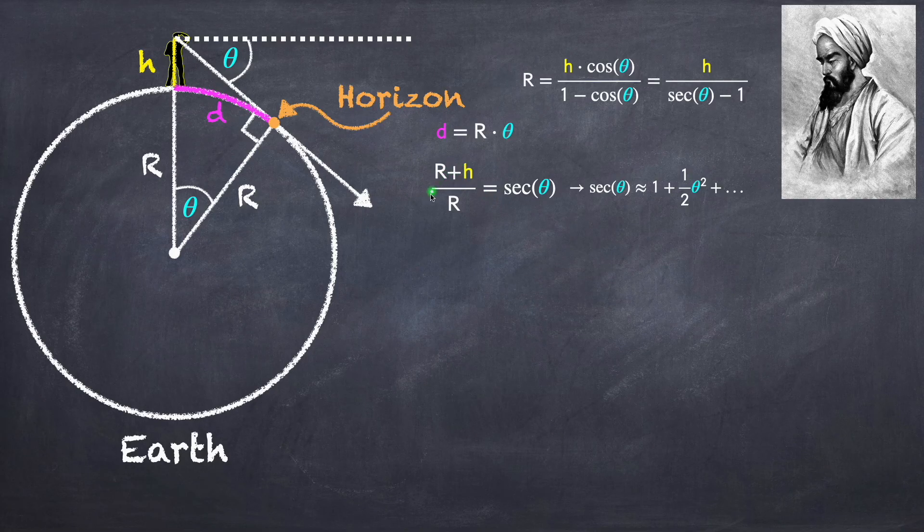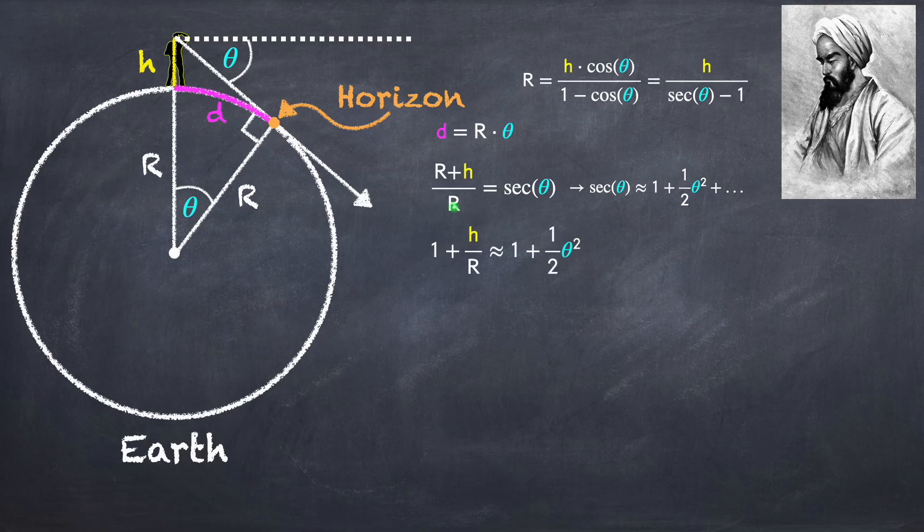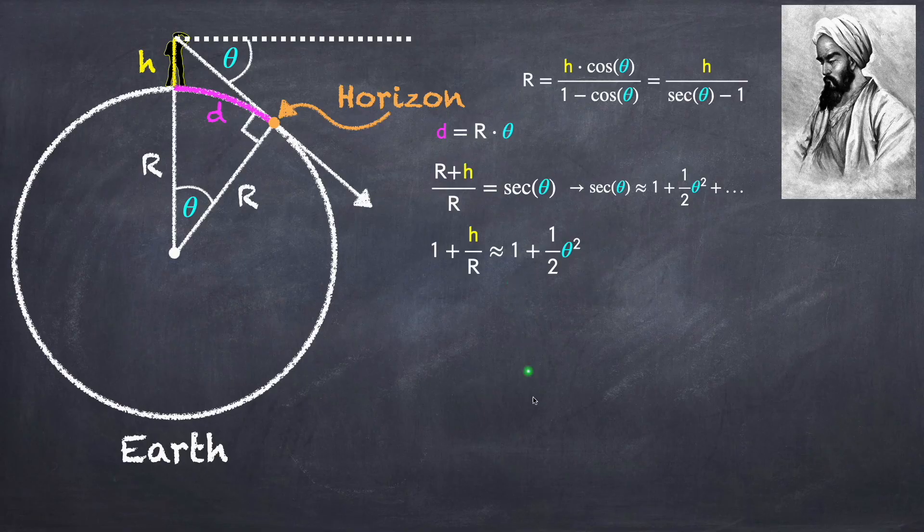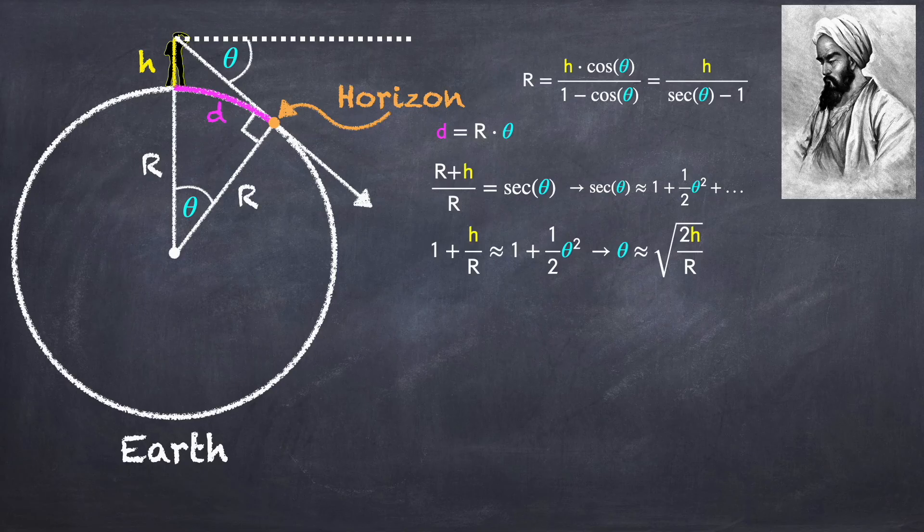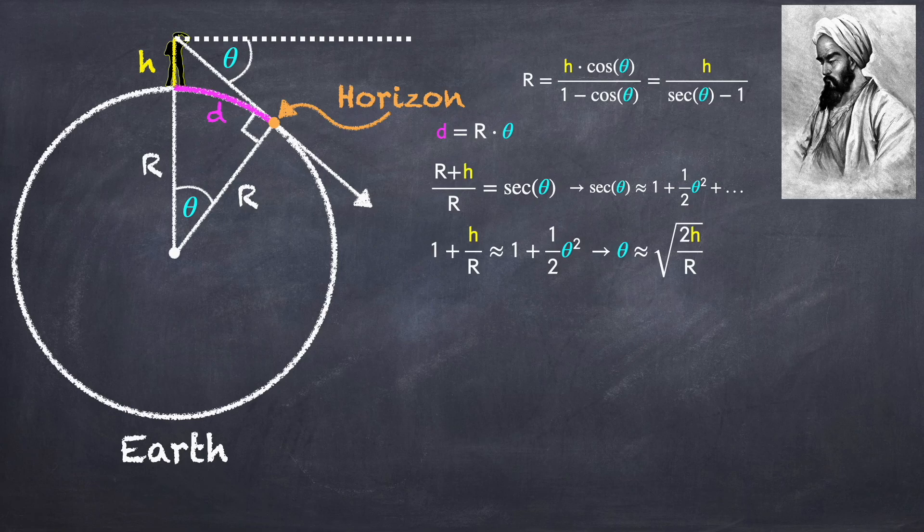So r plus h divided by r is equal to 1 plus h over r, and that's going to be equal to 1 plus theta squared over 2. Solving for theta gives us that theta is equal to the square root of 2h over r. If you're finding this video interesting so far, please like and subscribe, and maybe share it with a few friends.